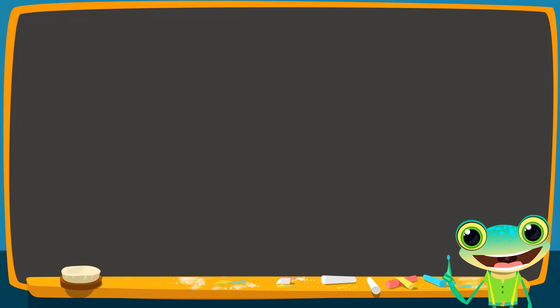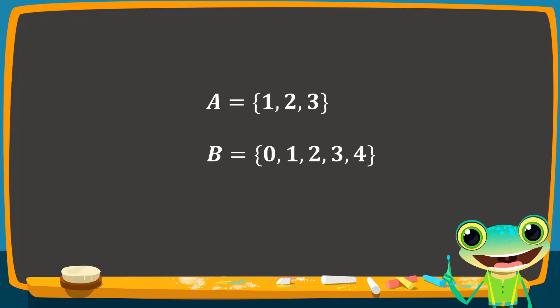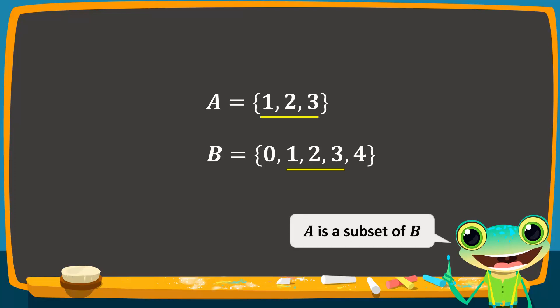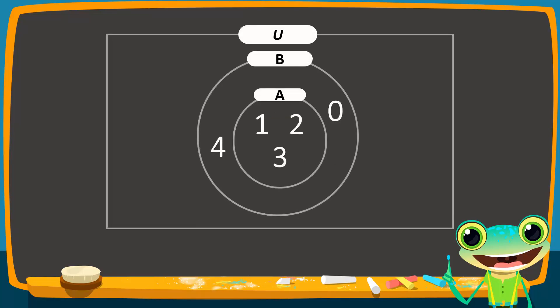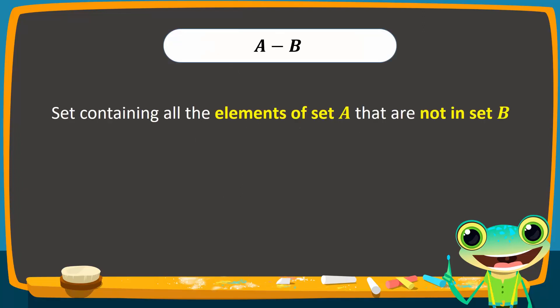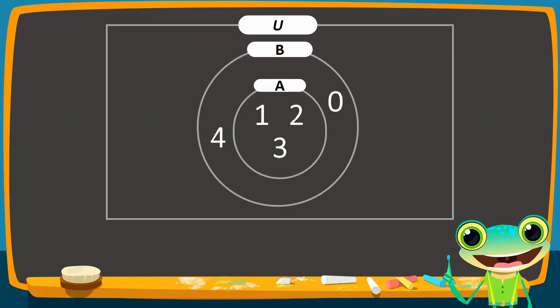Lastly, we consider the case when one set is a subset of the other. Set A contains the numbers 1, 2, and 3. Since each element of set A is also in set B, set A is a subset of set B. On a Venn diagram, these sets are represented as two unequal circles, where the smaller circle represents set A and lies inside the bigger circle, which is set B. A difference B is the set that contains all the elements of set A that are not in set B. Since there are no elements that are only in set A, A difference B is an empty set.